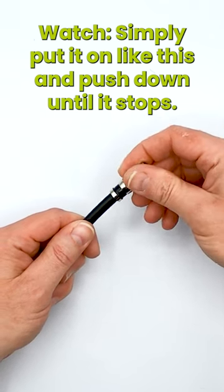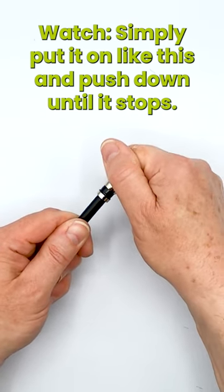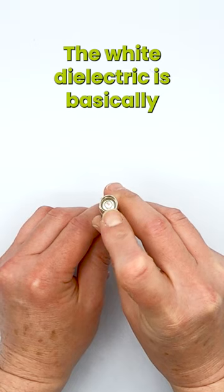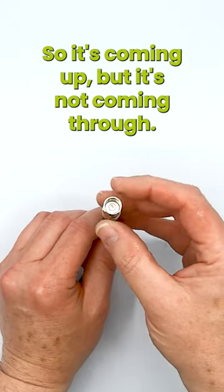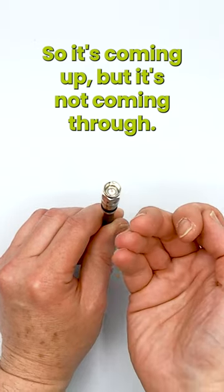Simply put it on like this and push down until it stops. The white dielectric is basically right at the very bottom of the threads on this nut here. So it's coming up, but it's not coming through.